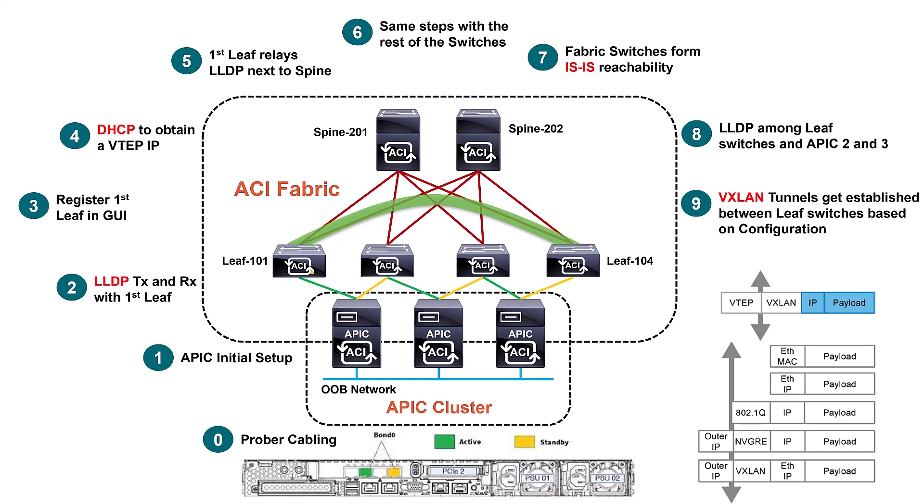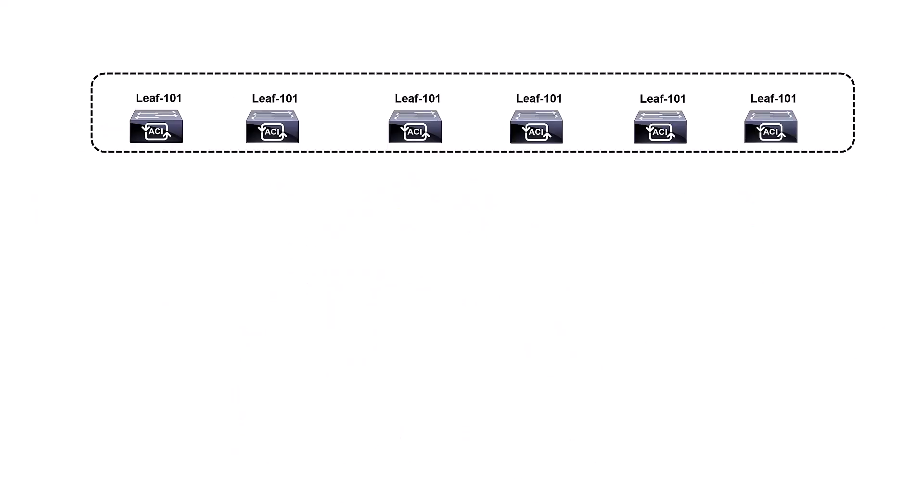That's how the VTEP devices communicate — using VXLAN tags. Whatever payload is sent by endpoints outside the fabric gets encapsulated with a VXLAN header on the way in, and on the way out the VXLAN tag is removed and the packet returns to its original form.